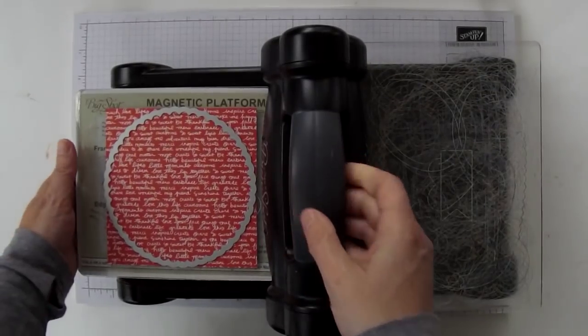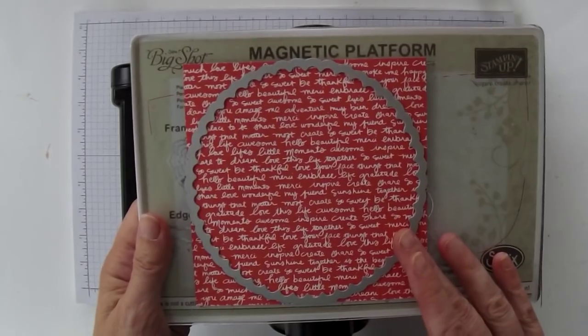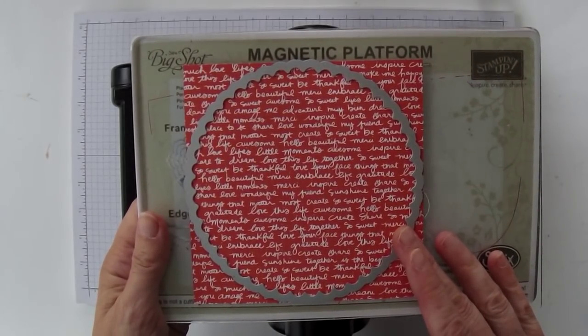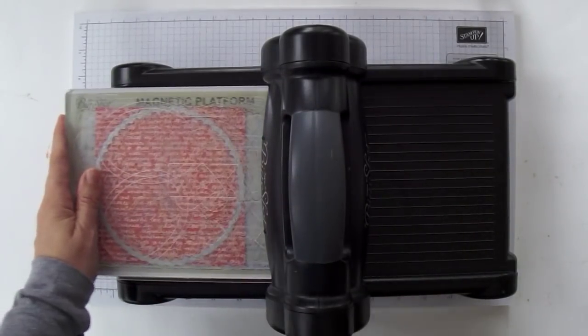So I'm going to bring in my Big Shot. I have a scallop circle framelit that is about 5 inches in diameter and I'm going to use some designer series paper and cut the scallop circle out of that.